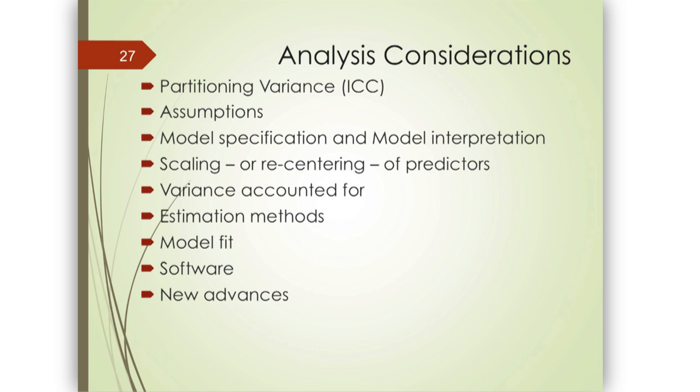Scaling or re-centering was a big question from the pre-workshop handouts. The basic idea goes back to how we want to interpret the intercept. When we talked about SES in High School and Beyond, the intercept is the prediction for math achievement when SES is zero — meaning at the average or grand mean for the entire sample. Many variables like self-esteem don't have a natural zero, so we re-scale them so that zero represents some meaningful value. That way the intercept refers to the point that matters to us most.